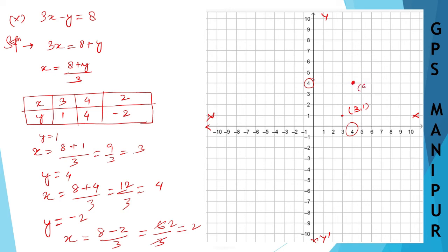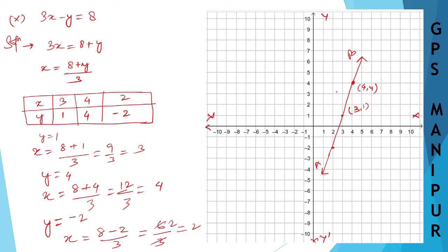When x is 2 and y is minus 2, this point comes and meets here. Now join the line — the line must not be crooked. If you join the line you get a straight line, and this is line AB. The equation is 3x minus y is equal to 8. That's all — this is how you draw the graph. If you find any difficulty, please write in the comments below. Thank you so much.